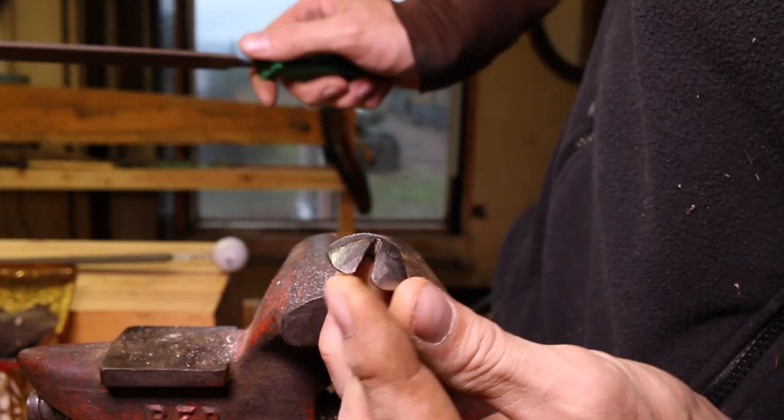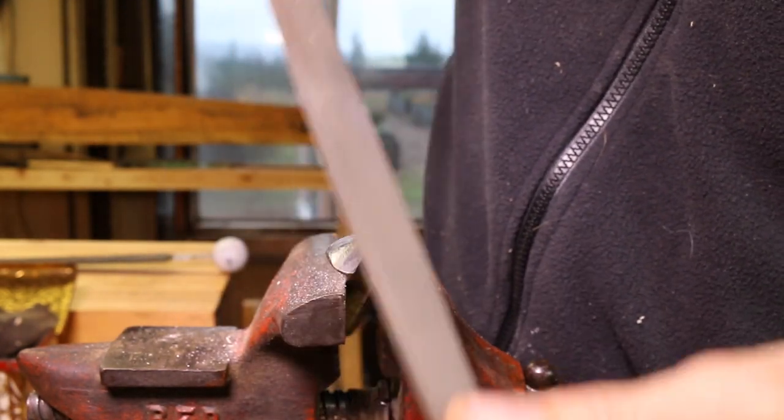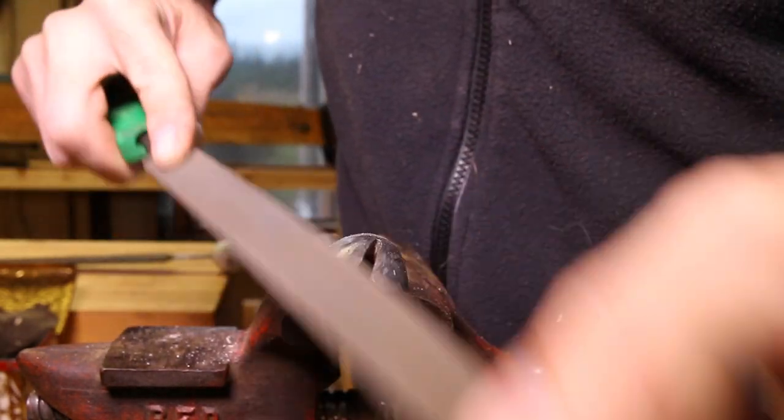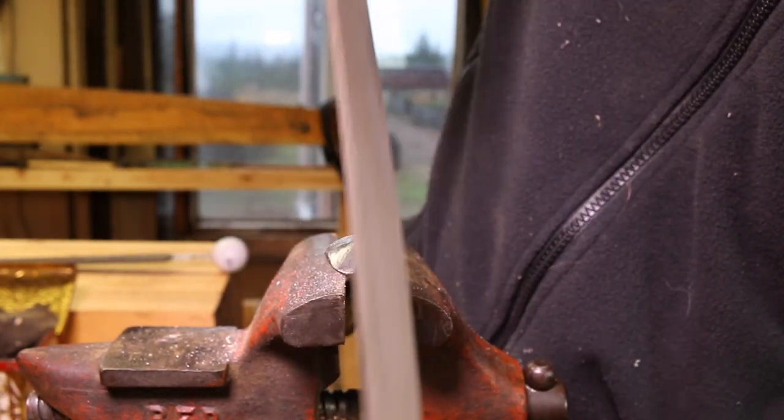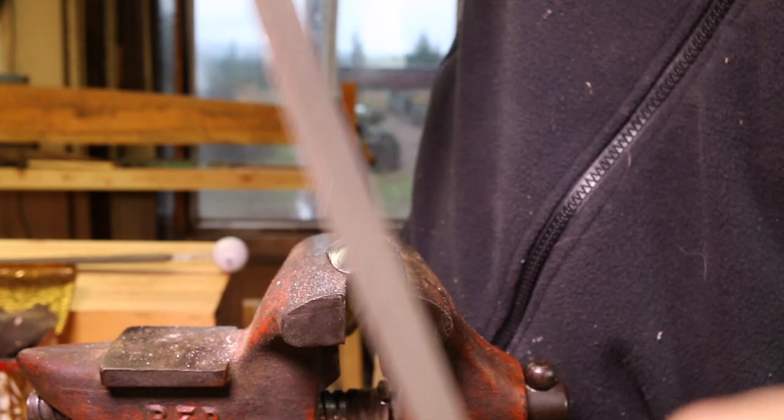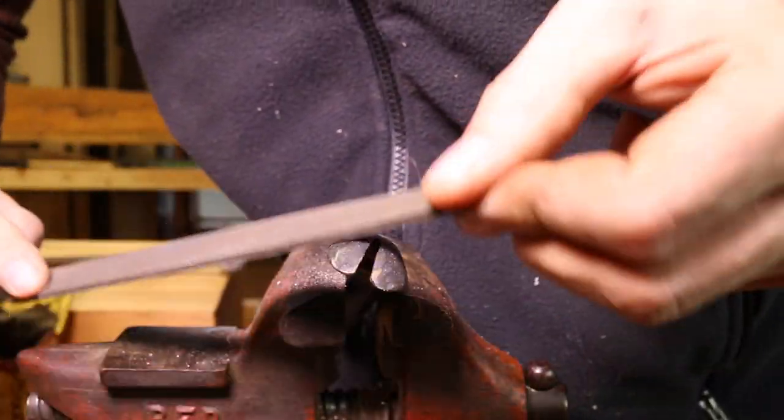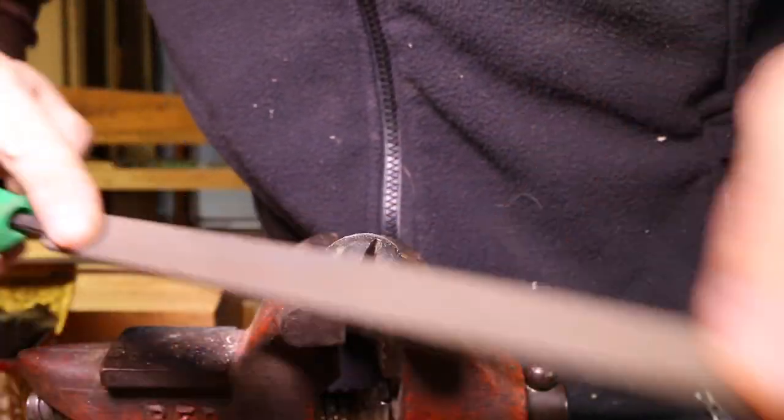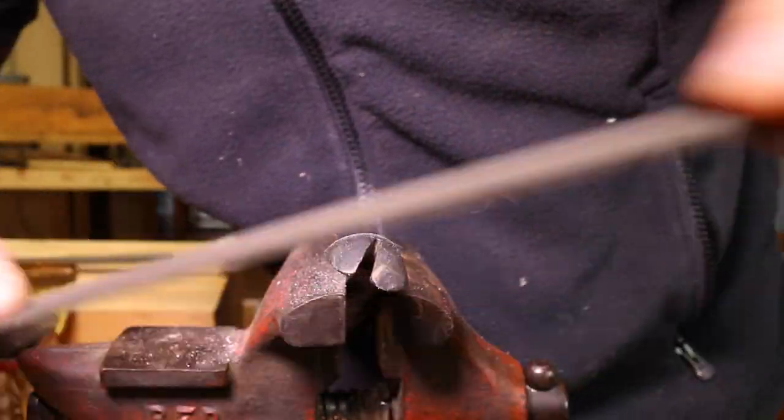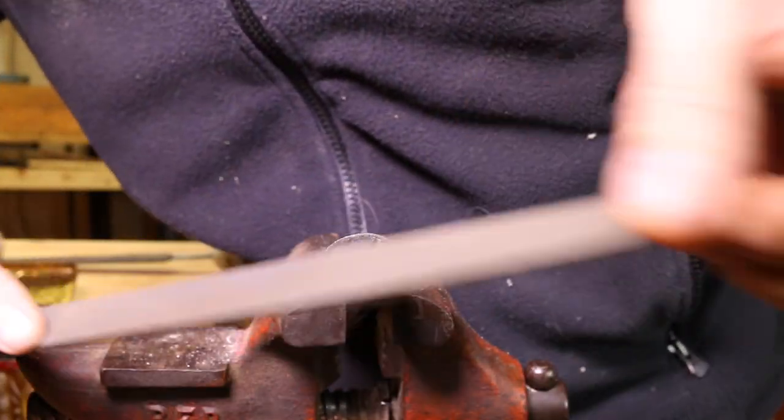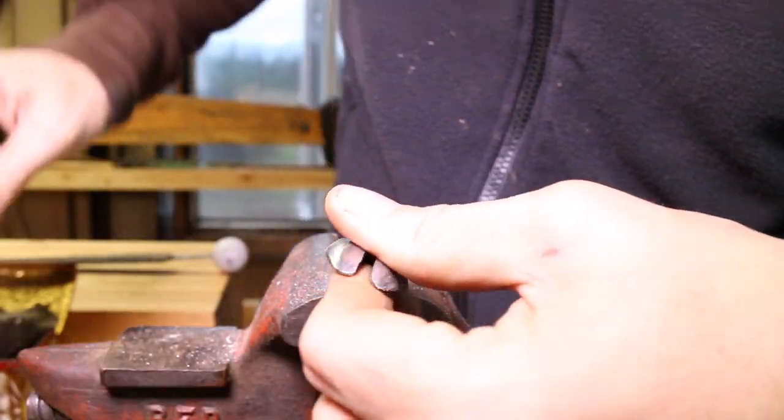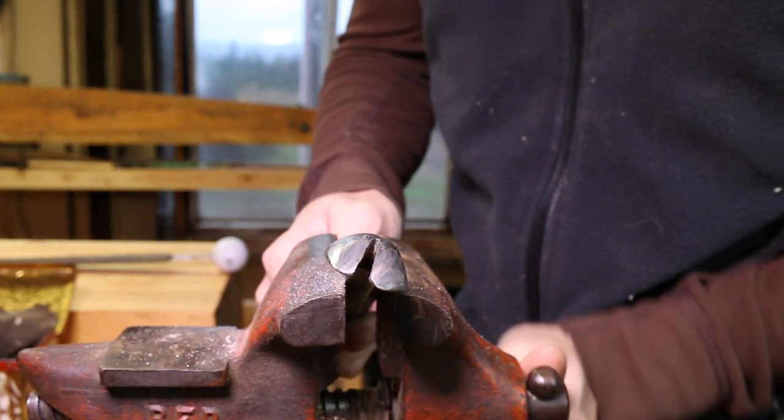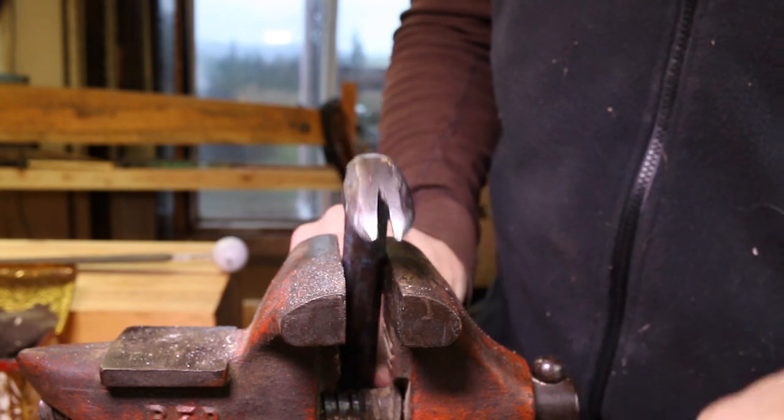You can see we got that down to a nice point right there. That's going to really bite and cut in the wood. We'll take our fine file and just clean that up, roll those edges. It's nice to have a tool performing at optimum level. That little edge on there is probably better than it was when it was brand new. We'll do the same thing on the other side.